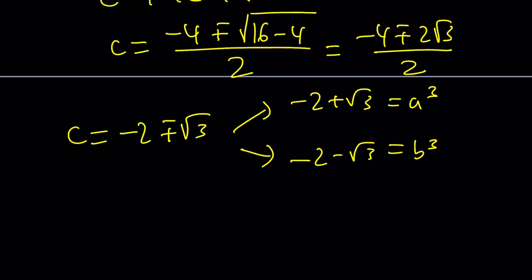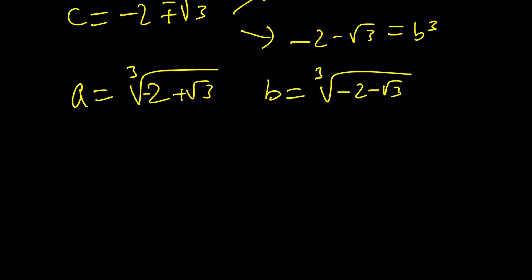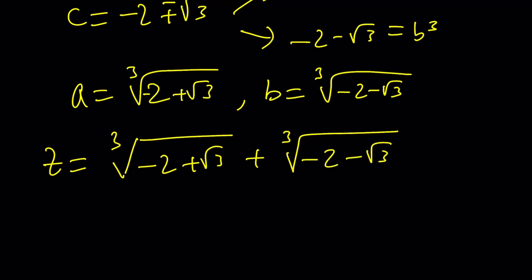So from here, a becomes the cube root of negative 2 plus root 3, and b becomes the cube root of negative 2 minus root 3. Don't panic. We can cube negative numbers in the real world, but they're just going to be negative. Now we have these two numbers, and z is equal to their sum. So z is going to be the cube root of negative 2 plus root 3, plus the cube root of negative 2 minus root 3. This wasn't very helpful.